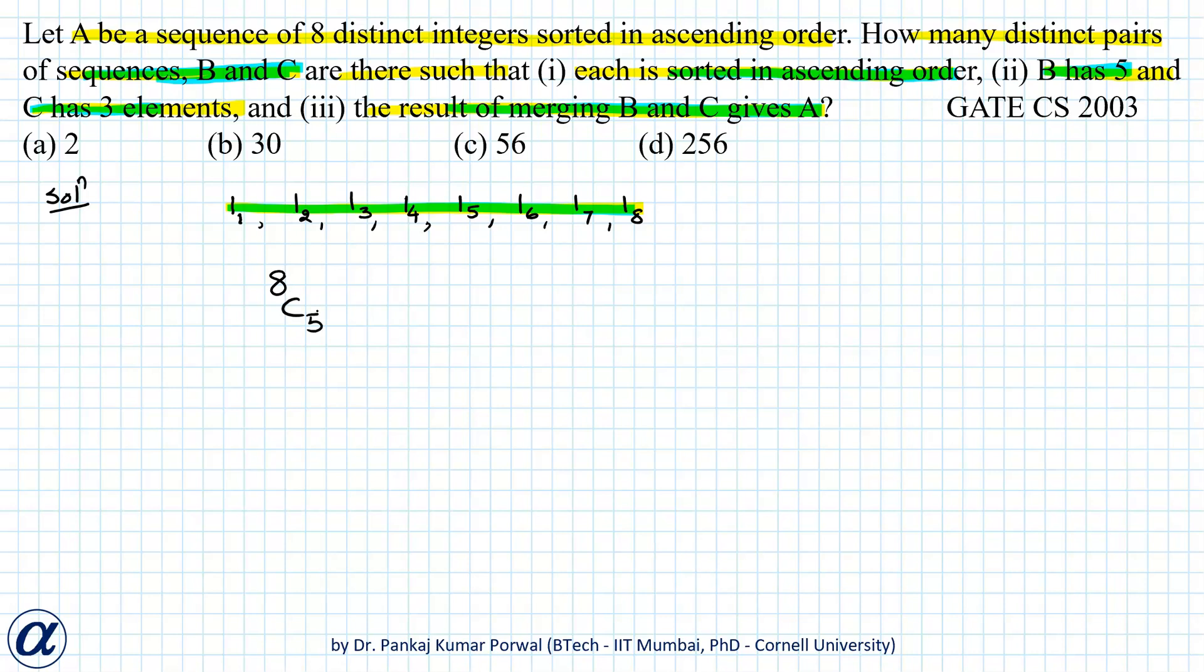And now because the selected integers in B should be in ascending order, there is only one way to arrange that. And the remaining three integers in ascending order will constitute our sequence C.